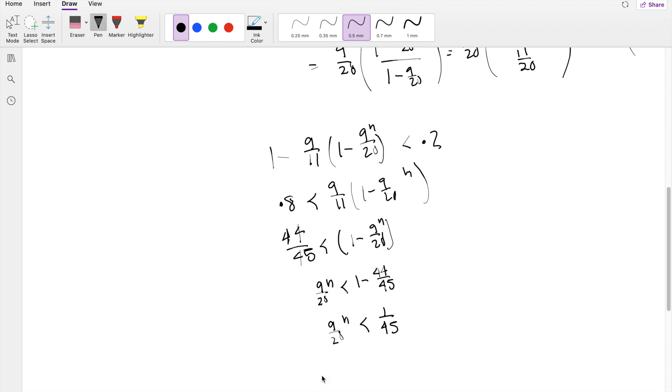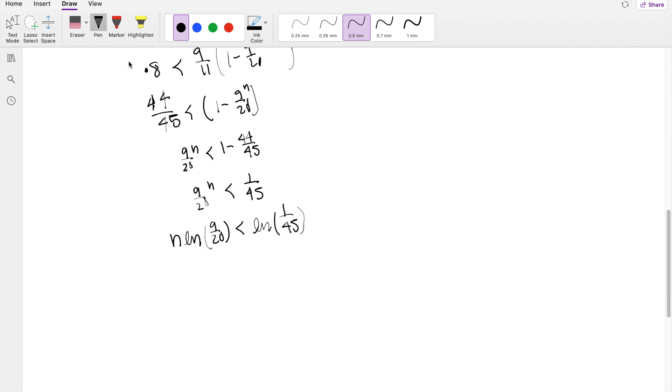Taking the natural log to bring this down, you get N natural log of 9 over 20 is less than natural log of 1 over 45. Divide both sides by natural log of 9 over 20, so N is greater than natural log of 1 over 45 divided by natural log of 9 over 20.